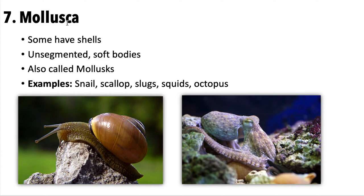Next is Mollusca, which will be paired with Echinodermata in the same unit. Mollusks are one of the most fascinating phyla — many have a shell, but not all. They have unsegmented soft bodies, like an octopus or snail. The soft parts are very soft, except for the shell. Examples include snails, scallops, slugs, squids, and octopus — quite a range.